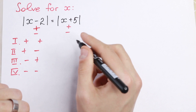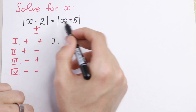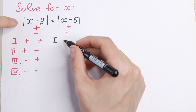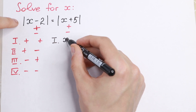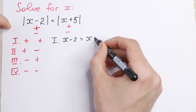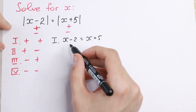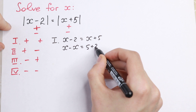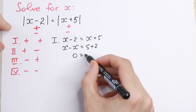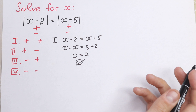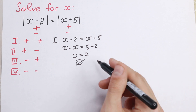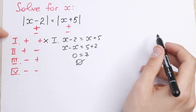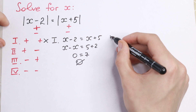First combination: both expressions are positive. If this one is positive, we will have x minus 2 equal to x plus 5. Let's solve this — bring x to the left, so x minus x equals 5 plus 2. We have 0 equals 7, which has no roots. So the first case gives us no roots.